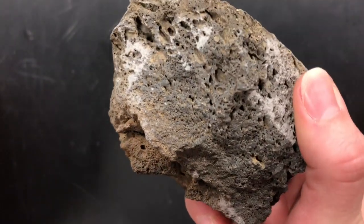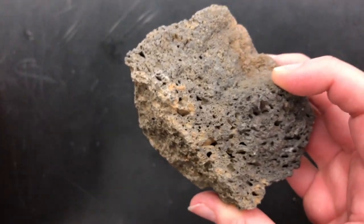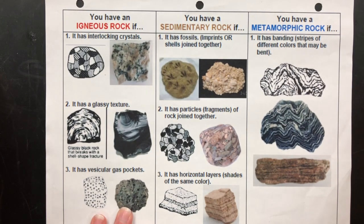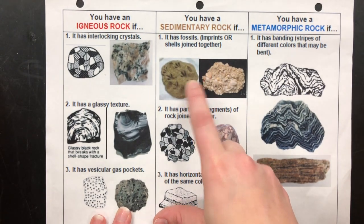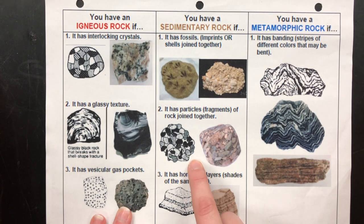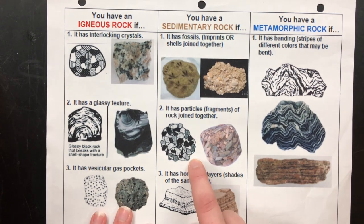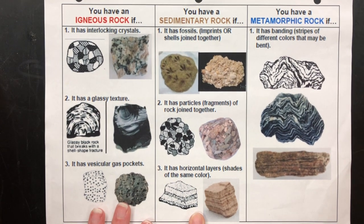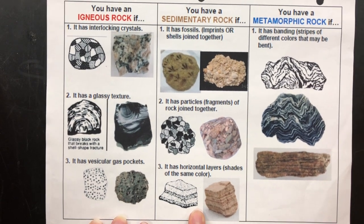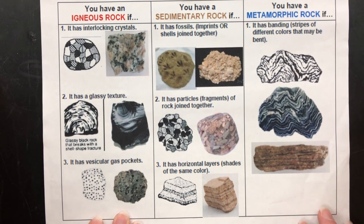Those are the three types of igneous rocks. Now we'll move into sedimentary rocks. Sedimentary rocks either have fossils, particles or fragments joined or cemented together, or horizontal layers that are shades of the same color. Let's look at some examples.